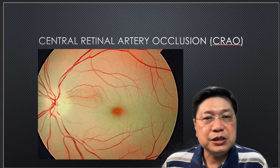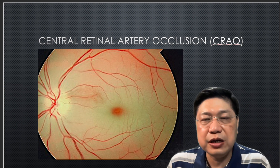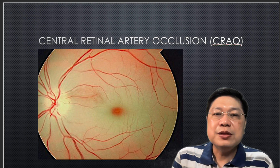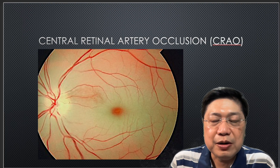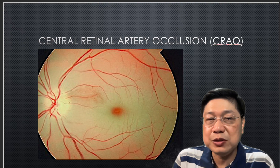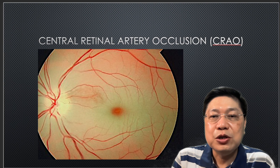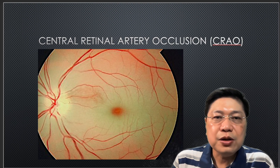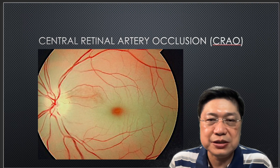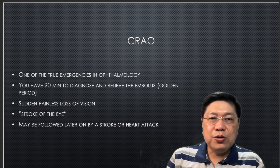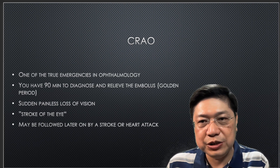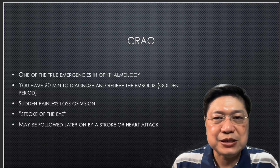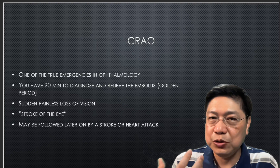A very important retinal pathology you need to understand is central retinal artery occlusion, or CRAO. In the early stages, when you look at it you can see what we call a cherry red spot — you can see redness around the macula because the entire retina has no blood perfusion, causing it to become pale. The reason you can see a cherry red spot is that you can see perfusion in the choroid area — not retinal perfusion. CRAO is one of the true emergencies in ophthalmology — there are only two: chemical burns and CRAO. It's an emergency because you have 90 minutes to diagnose and relieve the embolus — that's your golden period.